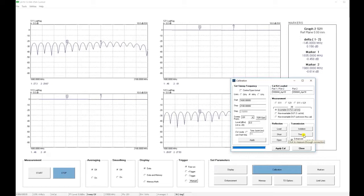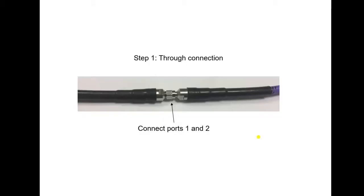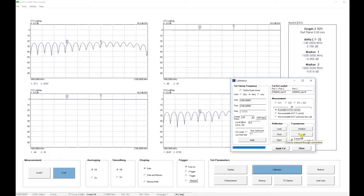That is where we simply connect the ends of the test cables together as shown. We can make the through measurement at a relatively high bandwidth of 1 kHz. We click on the through button, click OK, and the measurement is made.